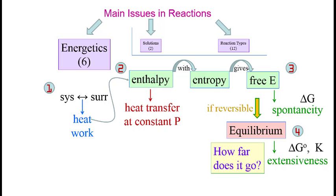When heat is transferred at constant pressure, there is an enthalpy change. If we combine enthalpy and entropy, we can get the free energy change, delta G, which indicates spontaneity.